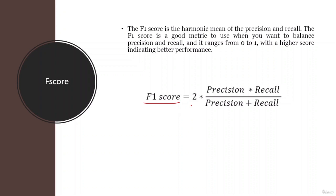The last performance metric is the F score, also known as F1 score. The F1 score is a metric used to evaluate the performance of a semantic segmentation model. It is calculated by taking the harmonic mean of the model's precision and recall, where precision is the number of true positive pixels divided by the total number of positive pixels predicted by the model, and recall is the number of true positive pixels divided by the total number of actual positive pixels in the image. The F1 score is a good metric to use when you want to balance precision and recall, and it ranges from 0 to 1, with a higher score indicating better performance. The formula is: F1 score equals 2 times precision times recall divided by precision plus recall.